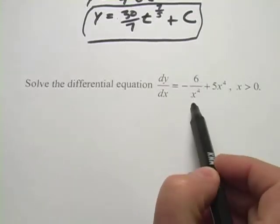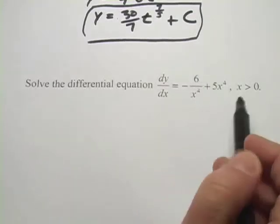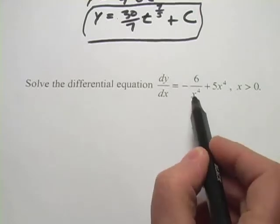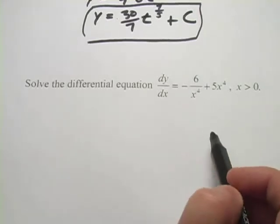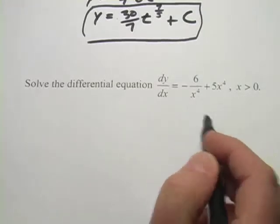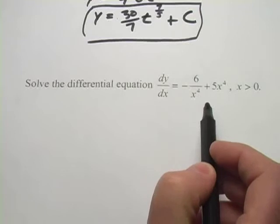And we've got negative six over x to the fourth plus 5x to the fourth. And there's this condition x is greater than zero. We'd be in trouble if x was zero. The function would be undefined there, so that's handy, I guess. But we're really going to apply the same procedure we did on the first one.